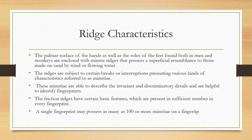Welcome to another session on fingerprints. We have already discussed patterns and classification — arch, loop, whorl. Arch is divided into tented arch and plain arch. Loop includes radial and ulnar loop. Composites are divided into central pocket loop and lateral loop. These are the main fingerprint pattern types.